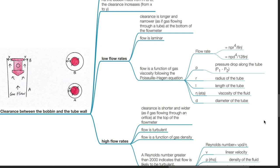r equals radius of the tube, l is length of the tube, eta is viscosity of the fluid, and d the diameter of the tube.